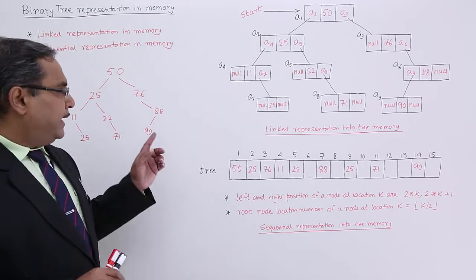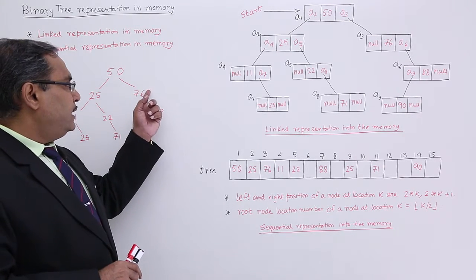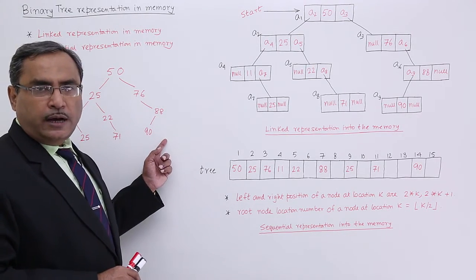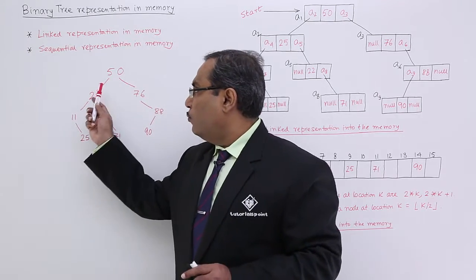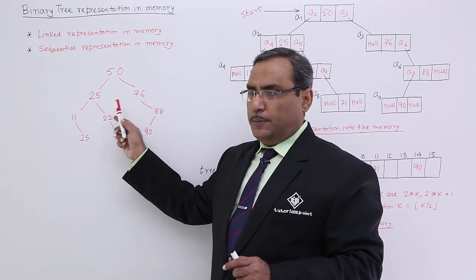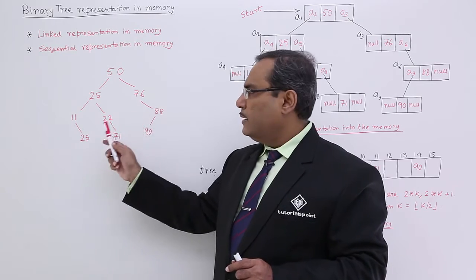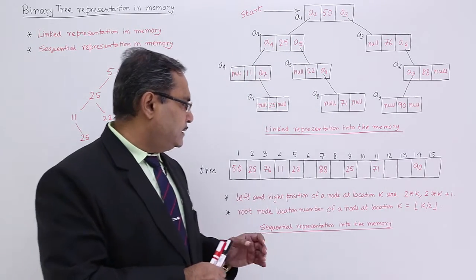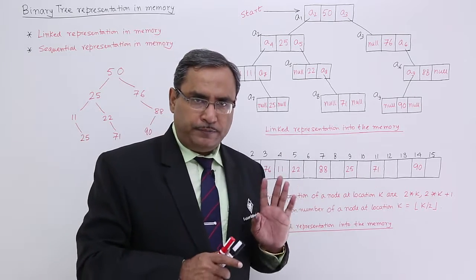How many nodes can the tree have? Up to level 0, level 1, level 2, level 3 — it can have 1 + 2 + 4 + 8 = 15 nodes. That is why I have taken this array having size 1 to 15.